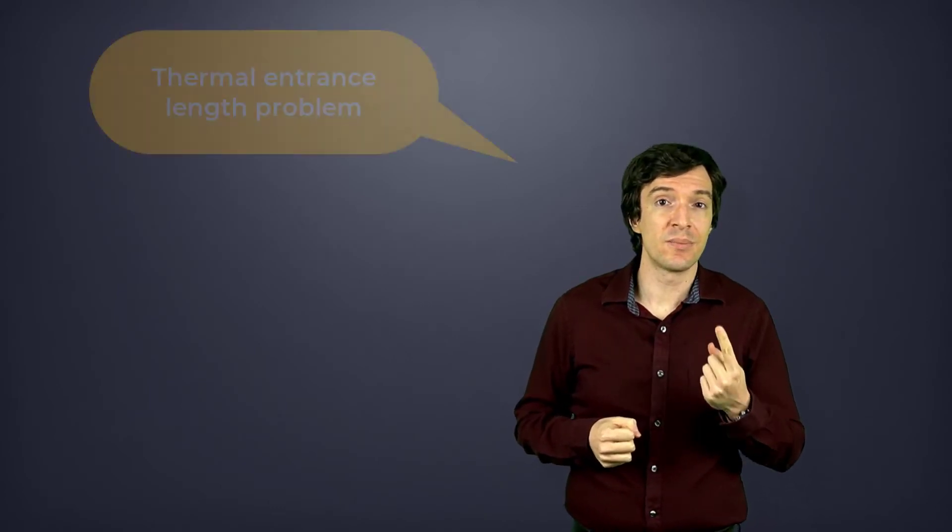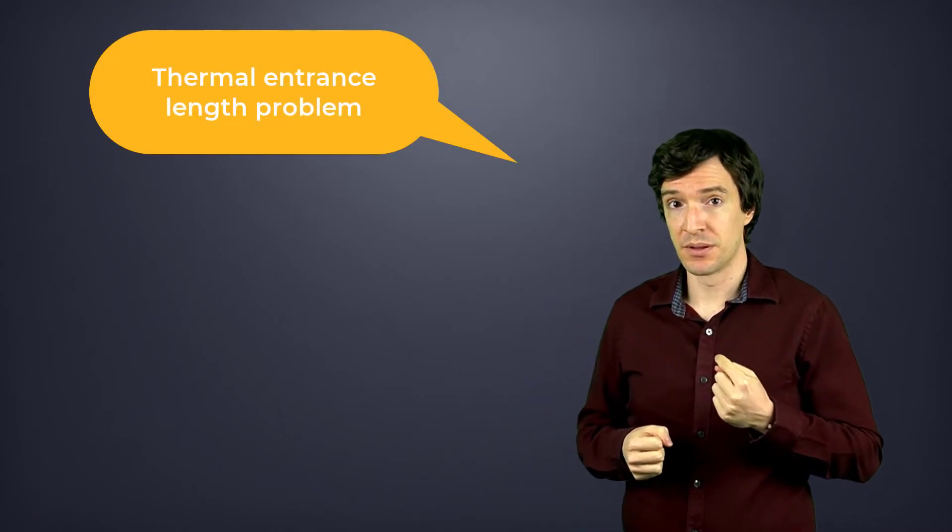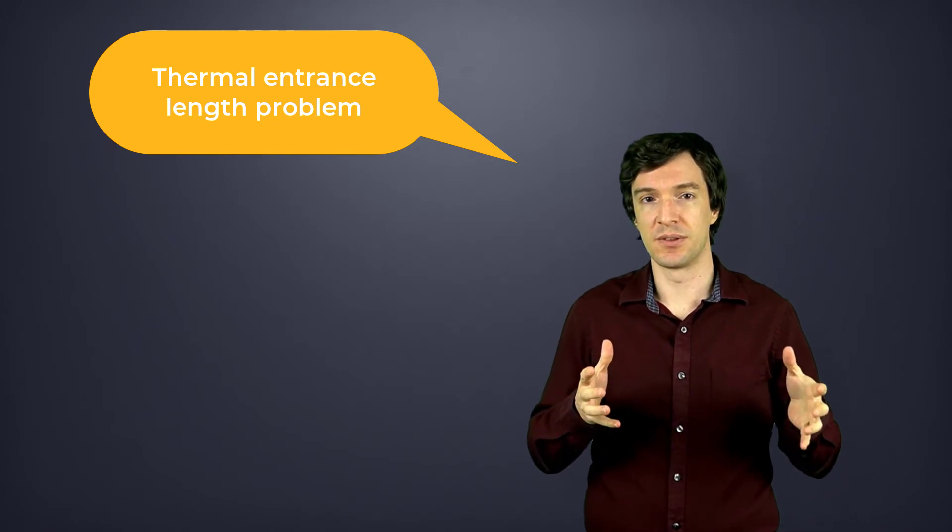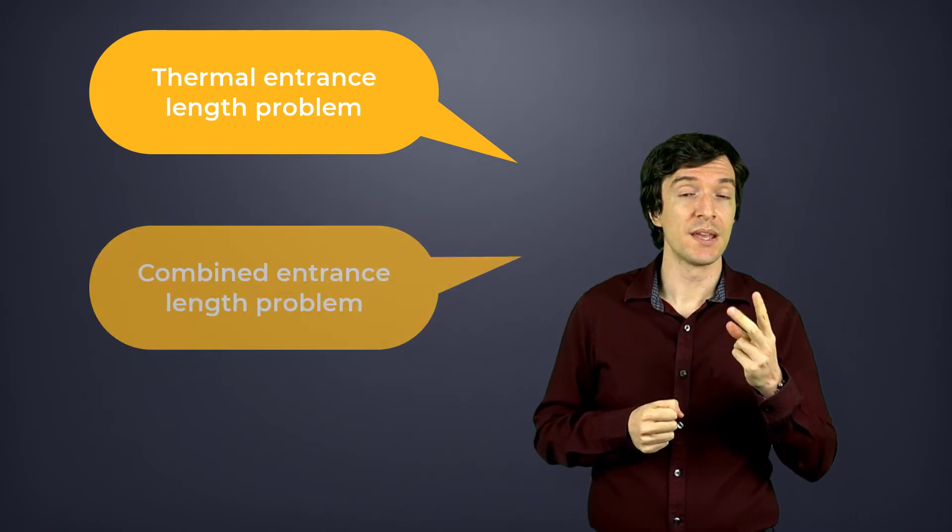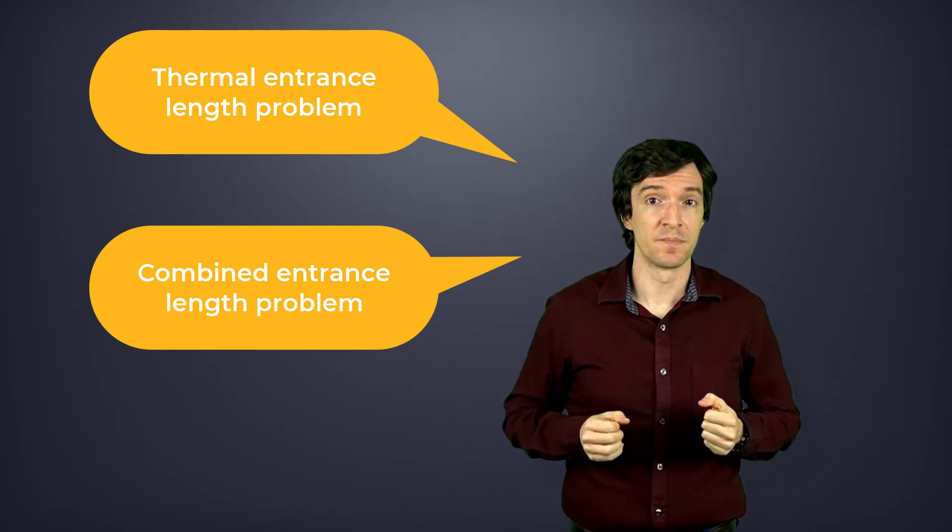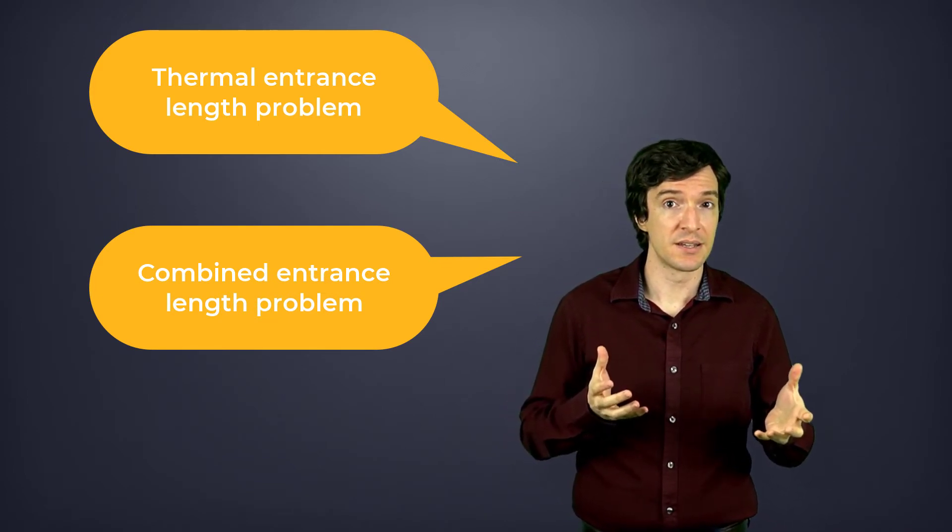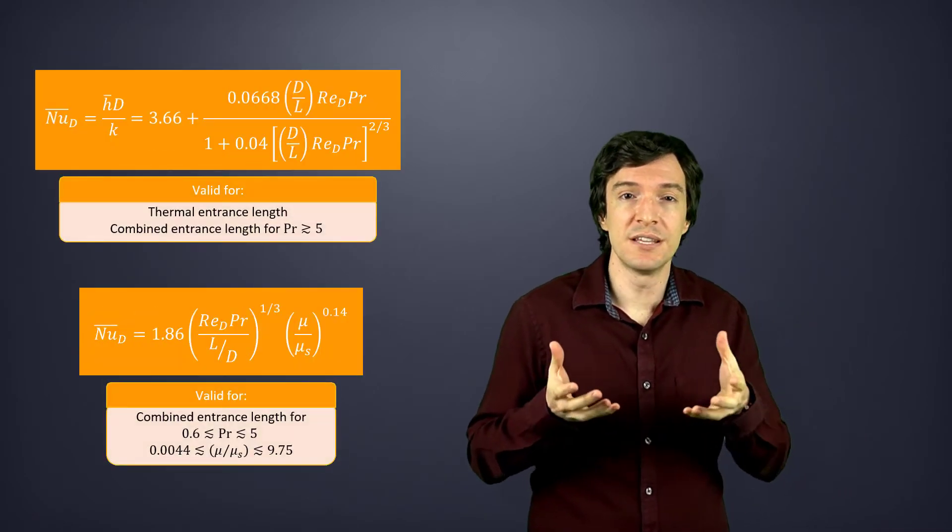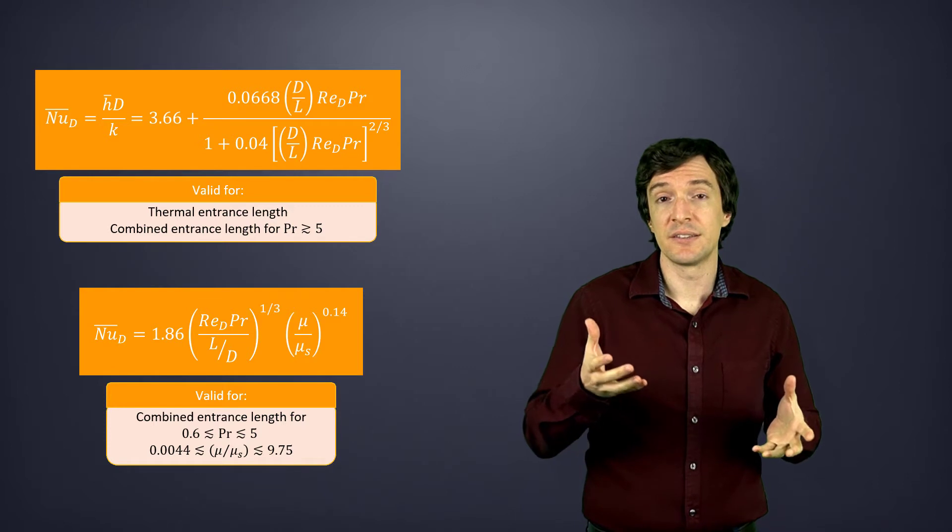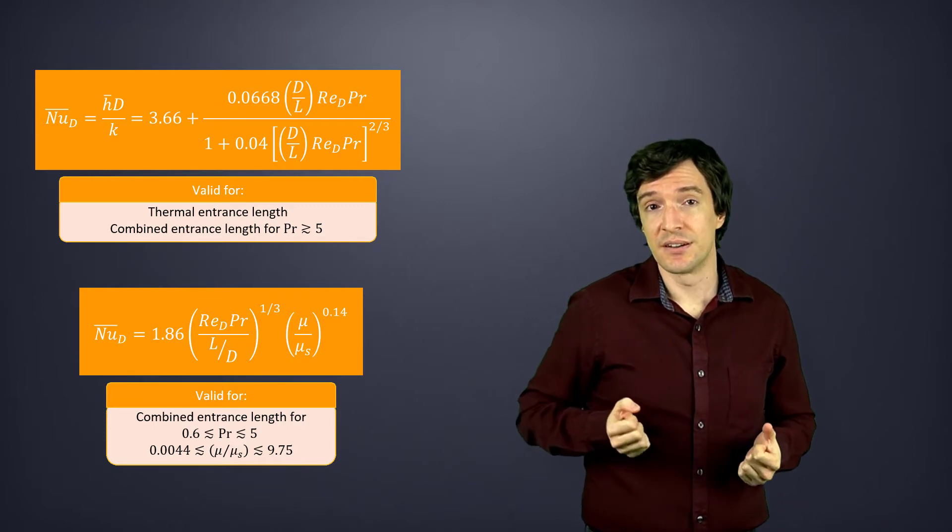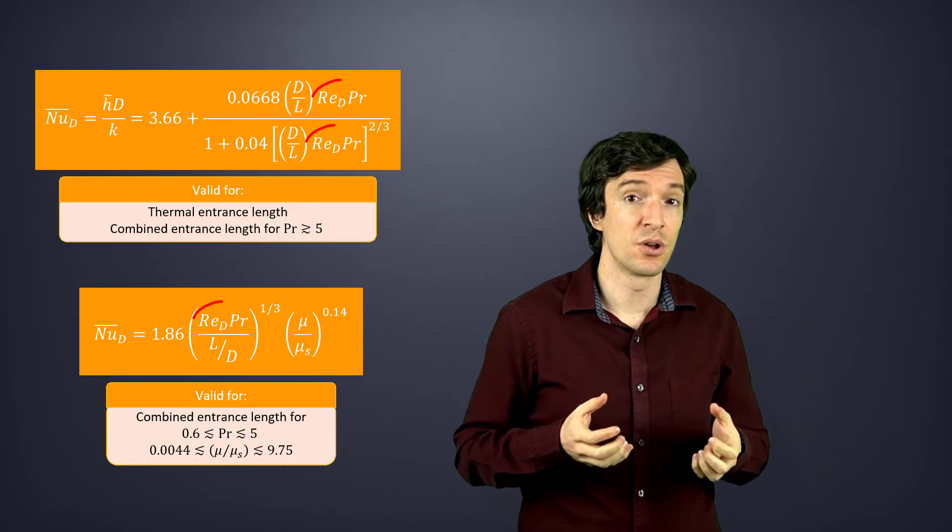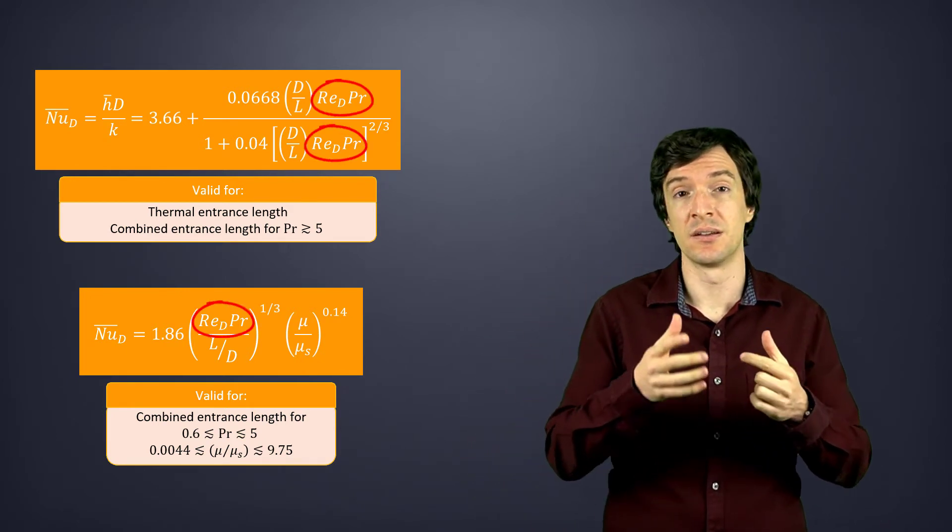One, the thermal entrance length problem, where the thermal profile is developing and the velocity profile is fully developed. Two, the combined entrance length problem, where both profiles are developing. Here are the correlations that we could use for these two cases, for the validity ranges that are shown here. We can see how the Nusselt number is now a function of Reynolds and Prandtl numbers.